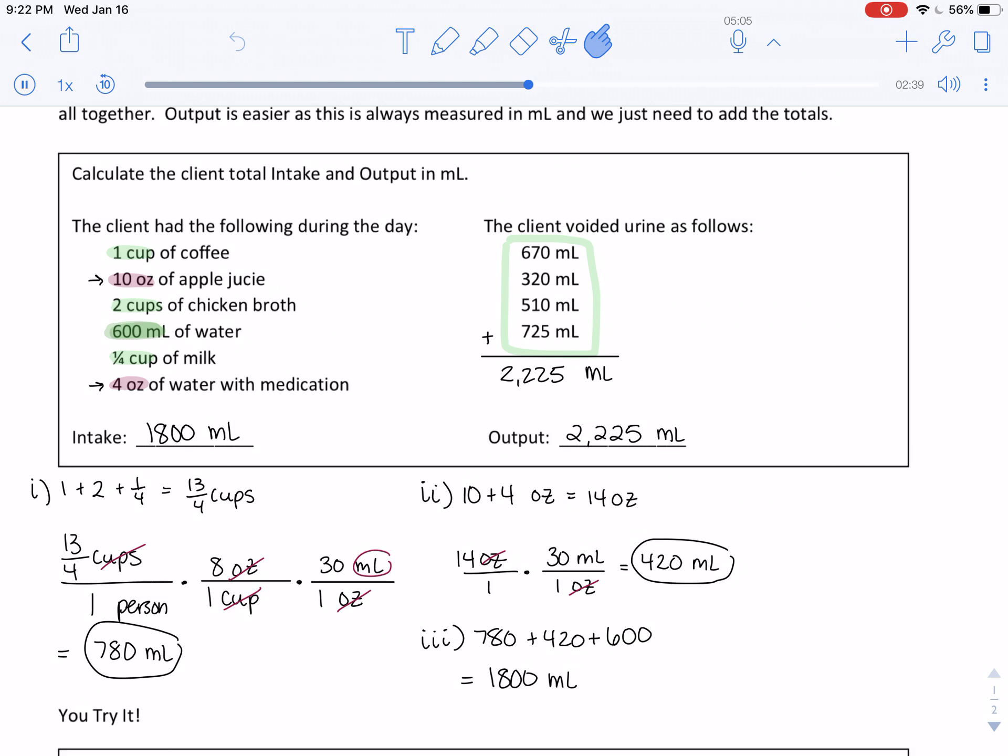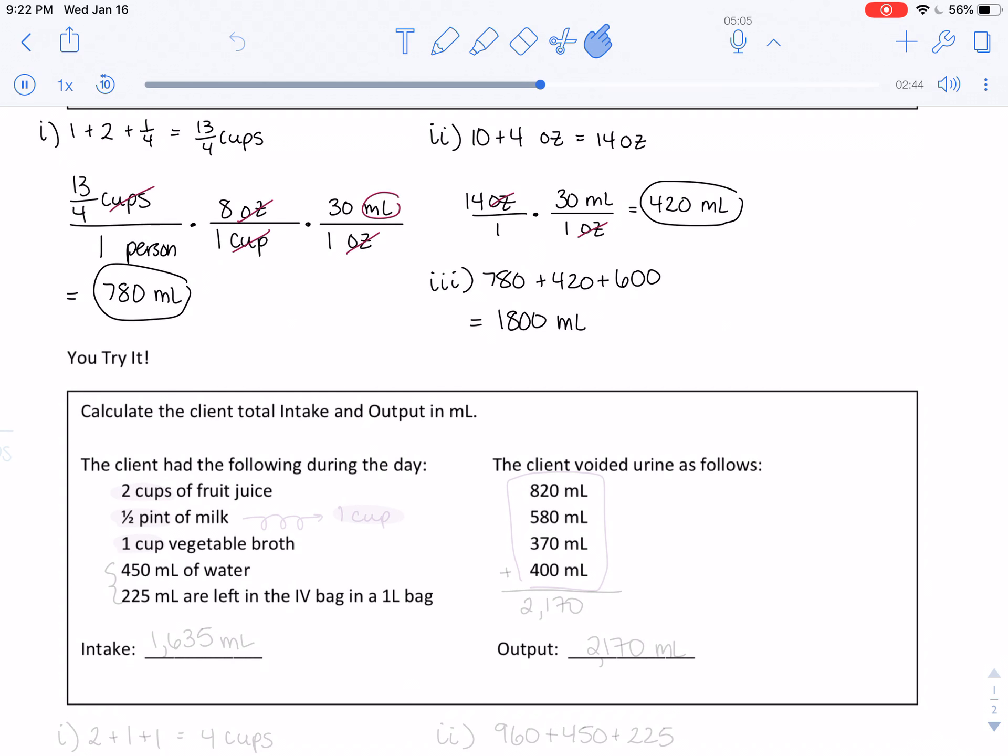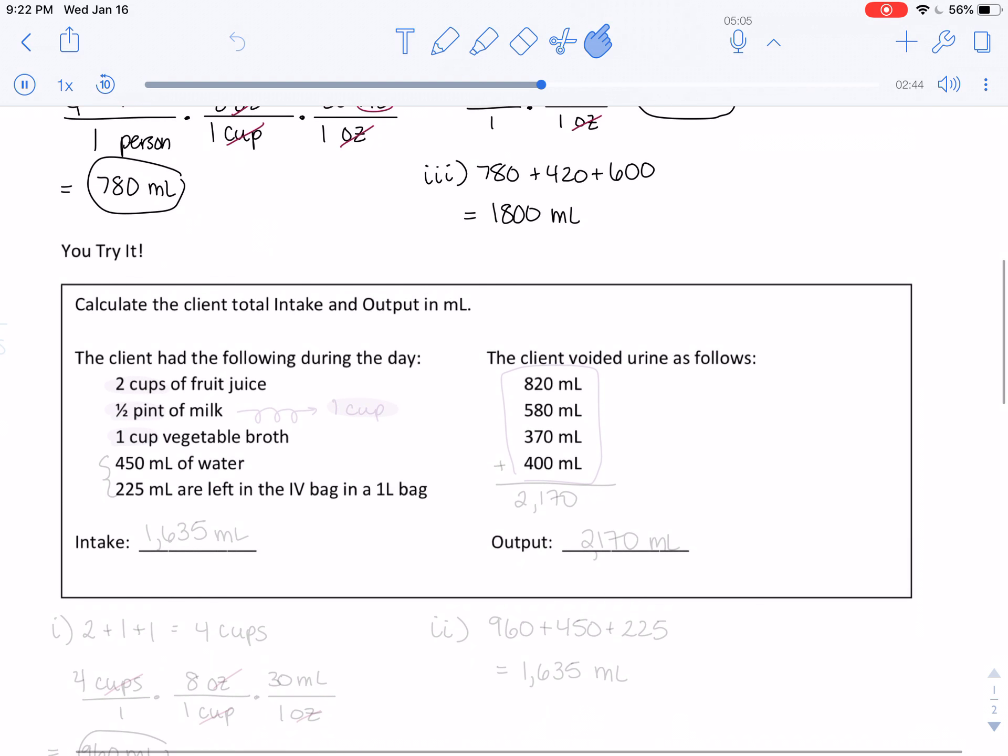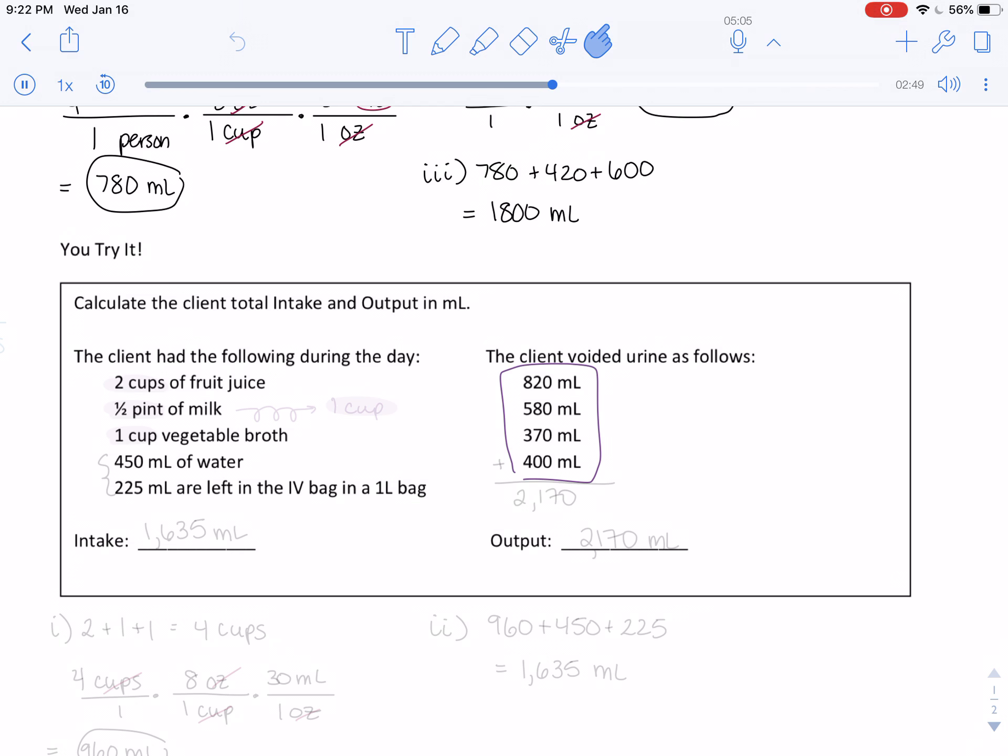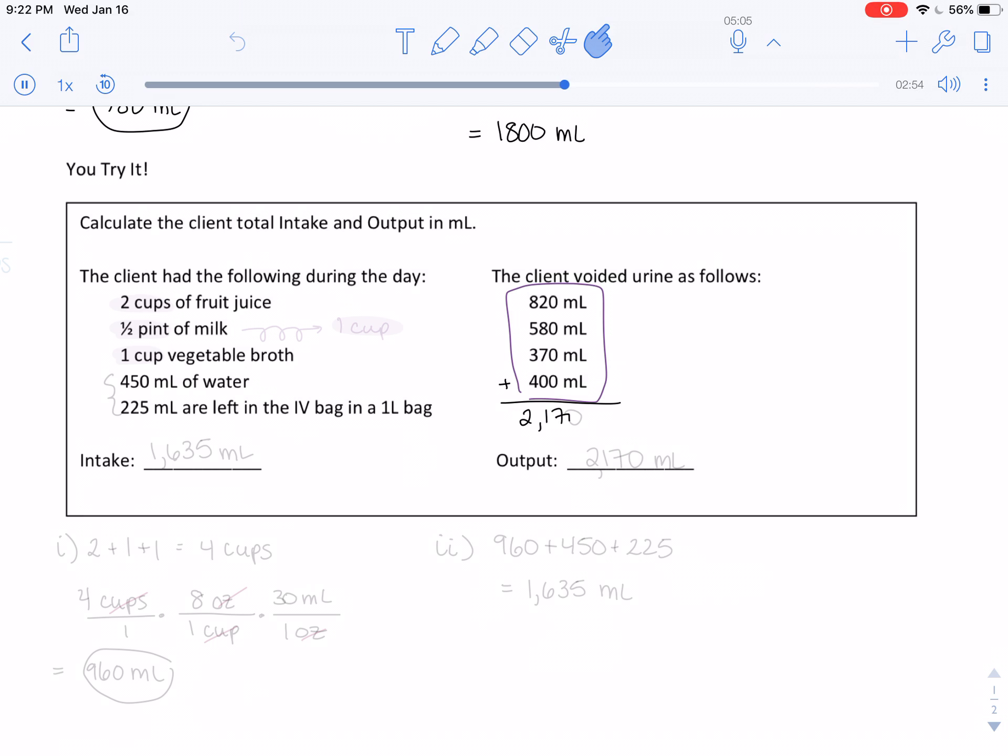Once again, we're going to convert anything on this left side into milliliters and add it all up. But on the right side, everything is already in milliliters, so we'll add those first for a total of 2,170 milliliters. On the left, the thing that sticks out to me most is this half pint. One conversion you might not know is that one pint is the same thing as two cups.